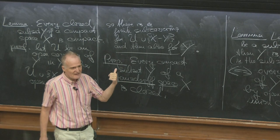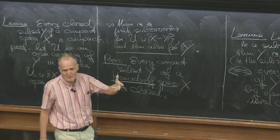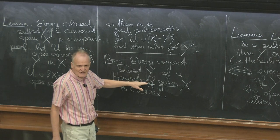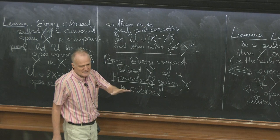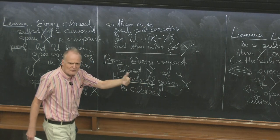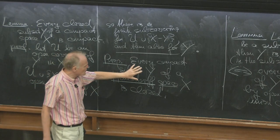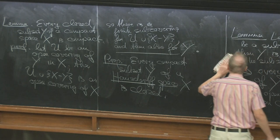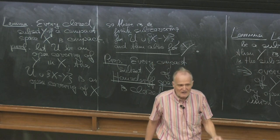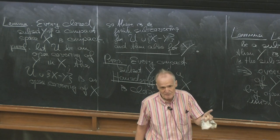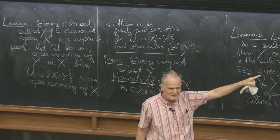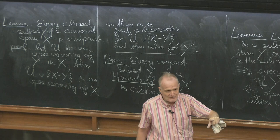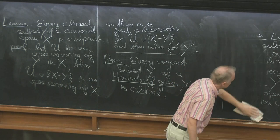Our definition is the definition of Munkres, not including Hausdorff. If you want closed compact sets, you need a compact Hausdorff space. The finite complement topology on an infinite set is not Hausdorff — it's T1 but not T2. That was an example from earlier.